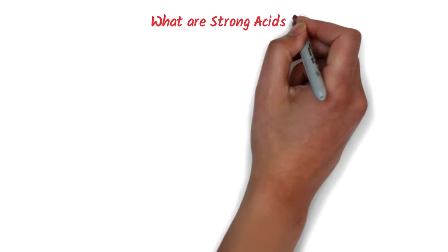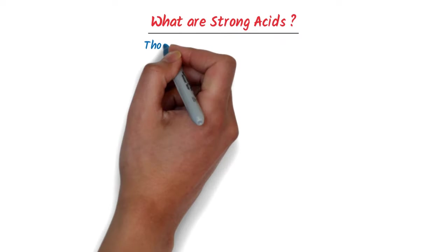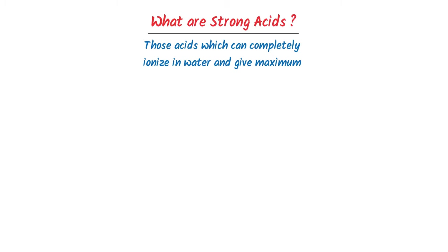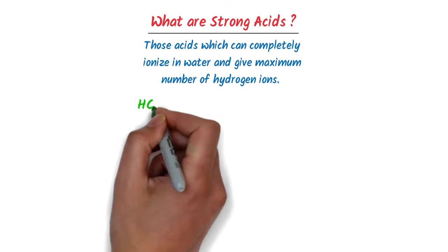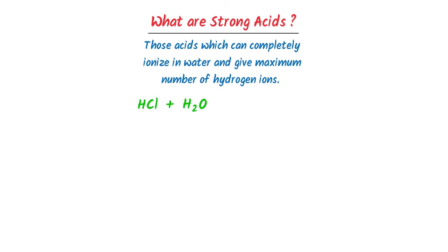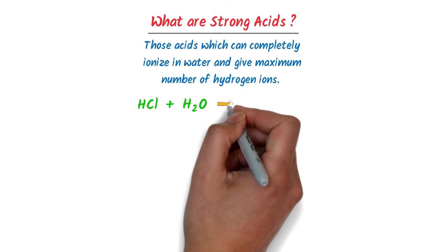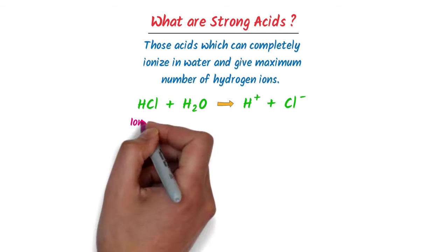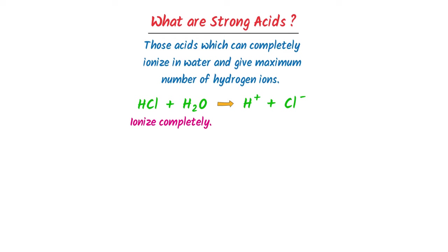Now what are strong acids? Strong acids are those acids which can completely dissociate or ionize in water and give the maximum number of hydrogen ions. For example, consider hydrochloric acid plus water. Hydrochloric acid completely ionizes into hydrogen ion plus chlorine ion, so it is a strong acid.